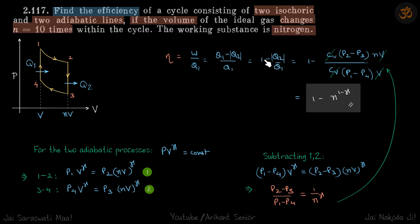This is what we need to find: 1 minus the modulus of q2 by q1. Now, in an isochoric process, delta q equals n Cv dT. We can write n Cv dT as (P2 minus P3) times V.